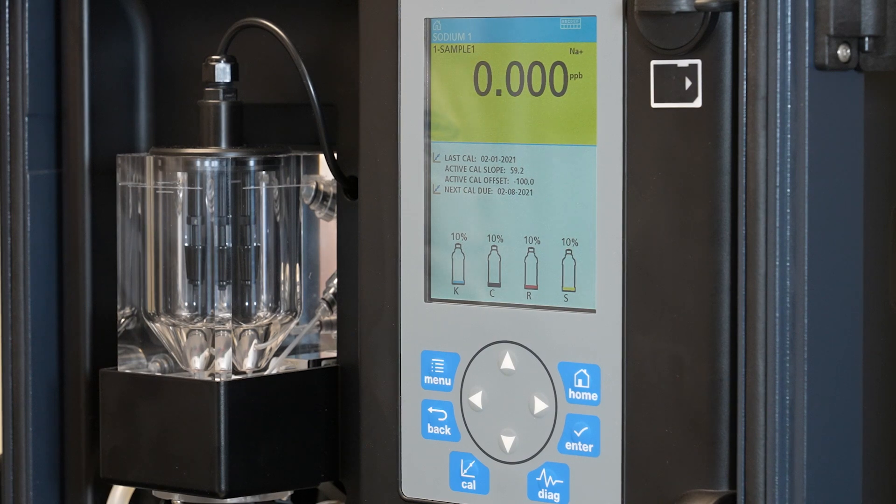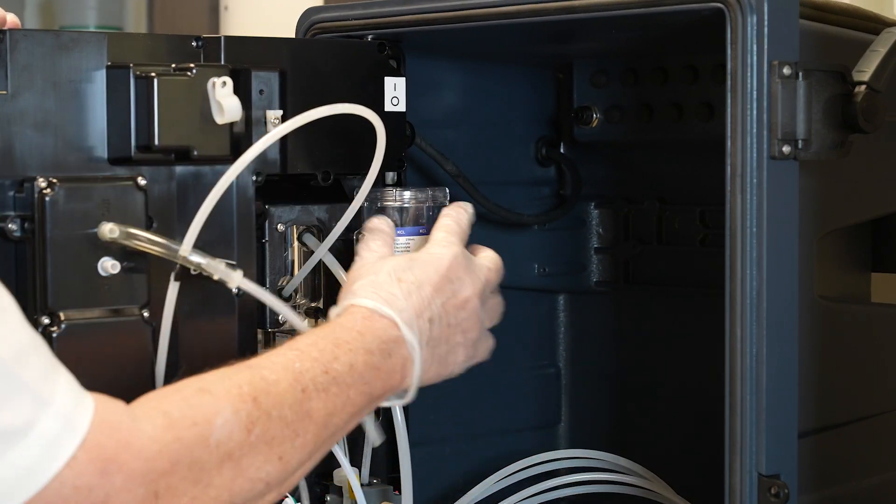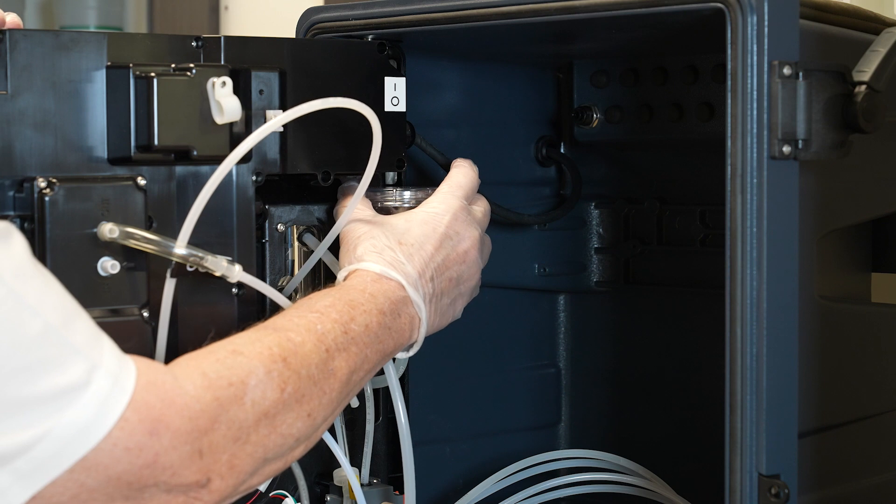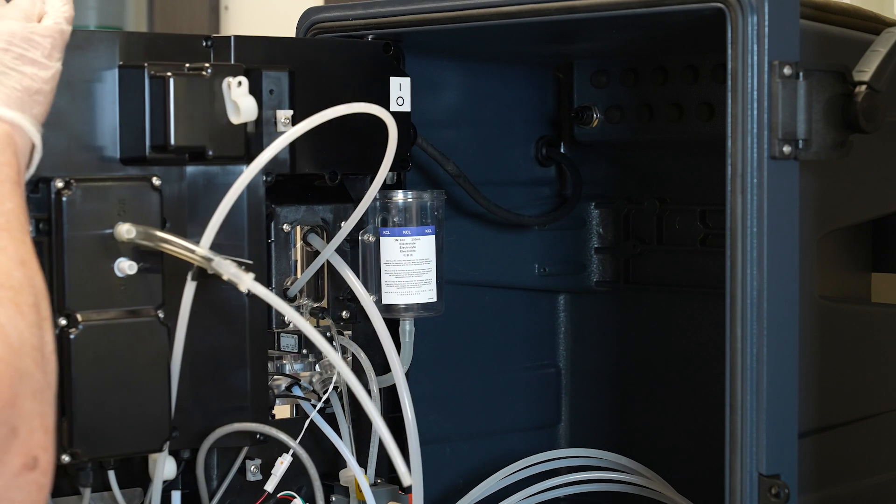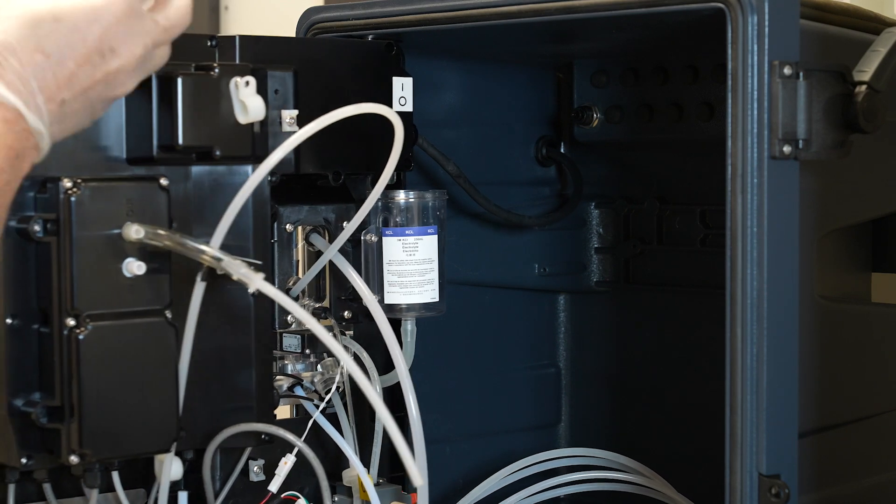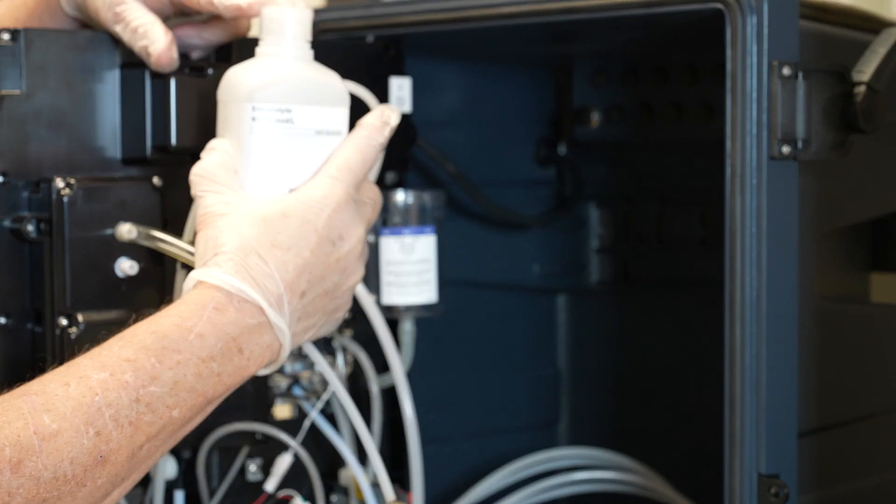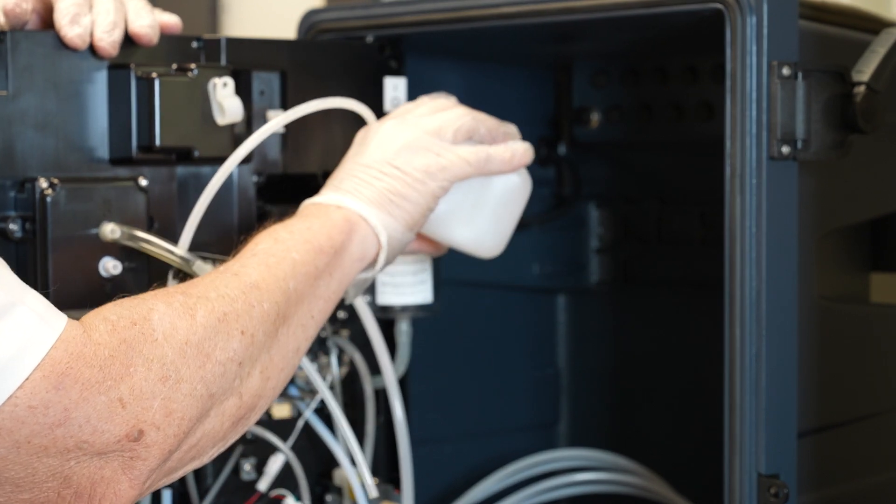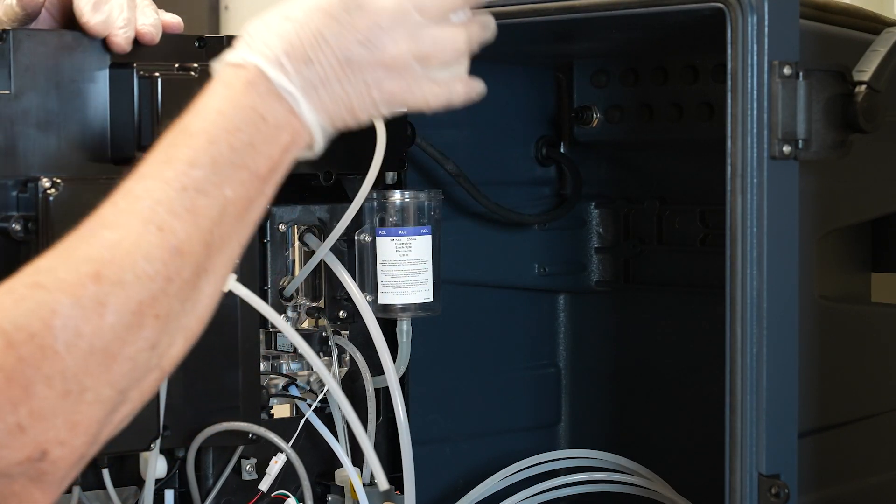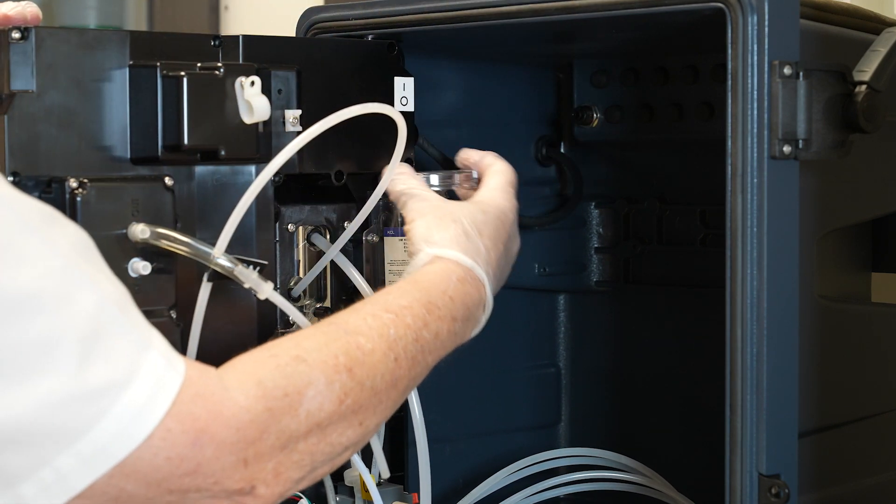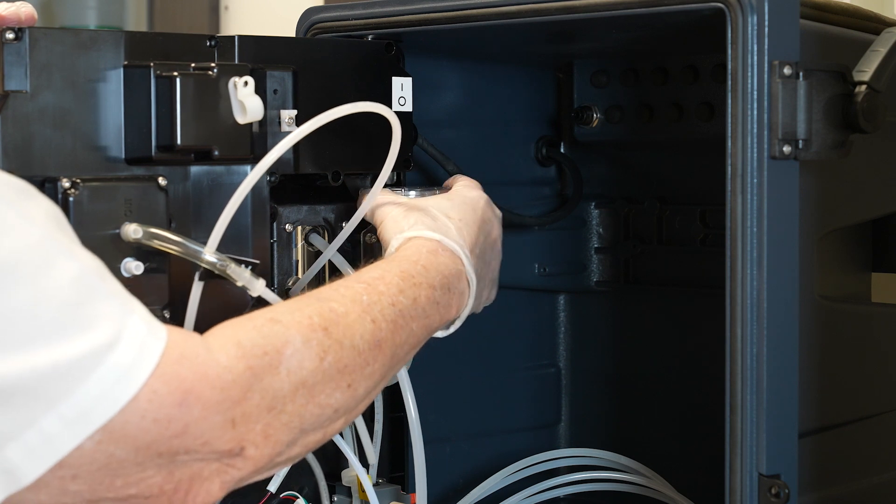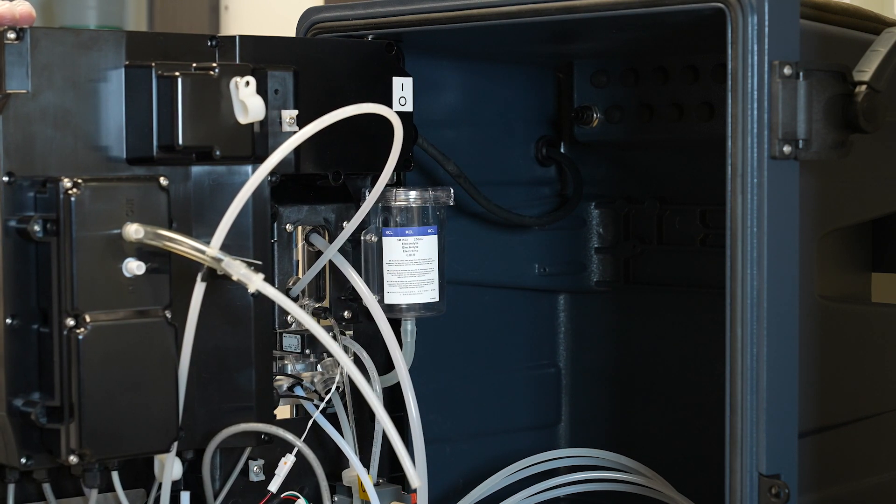The first thing we'll do is change out our reference electrolyte. We open up the cabinet. This is the reservoir for our reference electrolyte. We simply remove the cap. The reference electrolyte bottle that I showed earlier we would unscrew the cap and we would pour into this reservoir until it's full and replace the cap. That changes out your reference electrolyte.